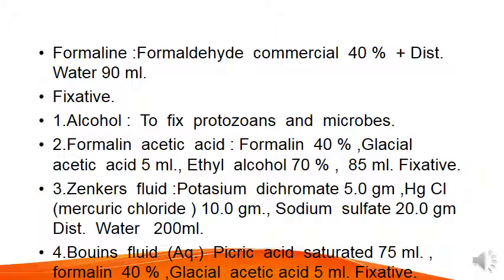Formaline is made from formaldehyde commercial 40% plus distilled water 90 ml. Fixatives are: Number 1, alcohol — to fix protozoans and microbes. Number 2, Formaline Acetic Acid: formaline 40%, glacial acetic acid 5 ml, ethyl alcohol 70%, 85 ml — used as fixative.